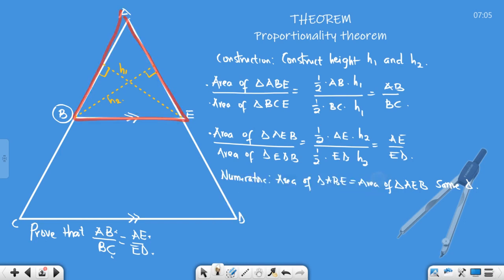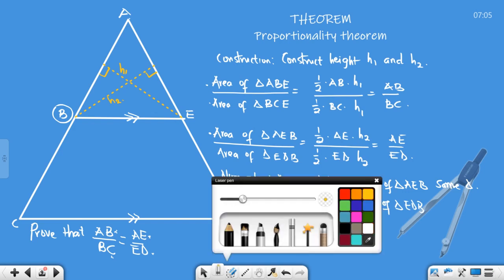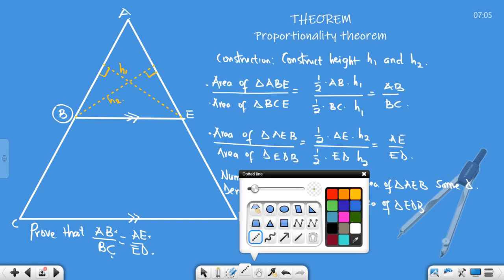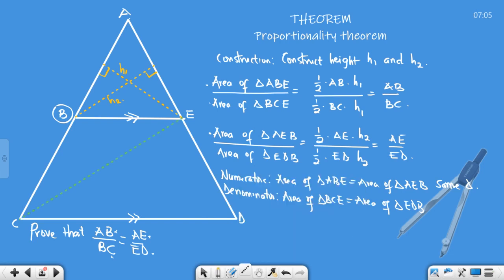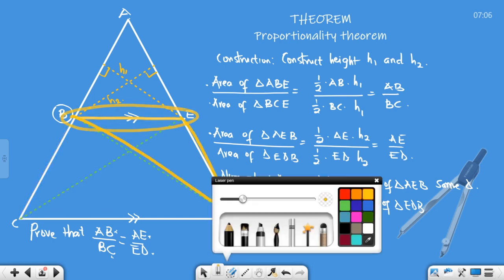Our job is now to look at the denominator. Area of triangle BCE must also be equal to the area of triangle EDB. Let's construct that triangle in green. Look at this triangle, and we're looking at this other triangle. Do you notice something? They have the same base.